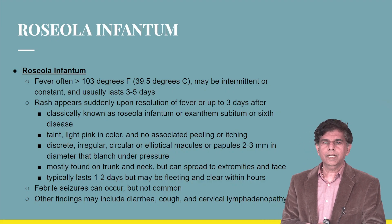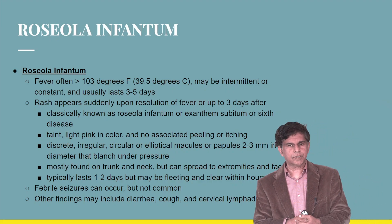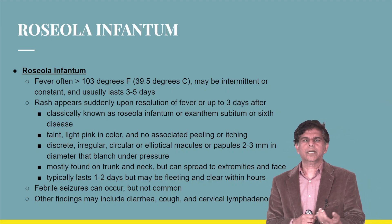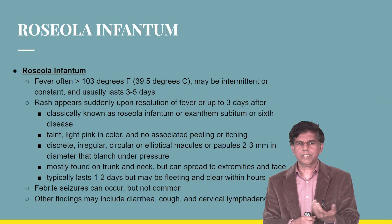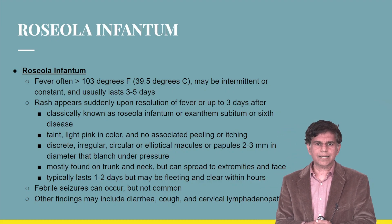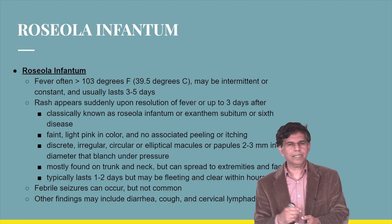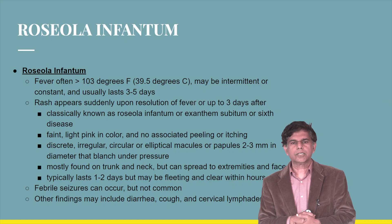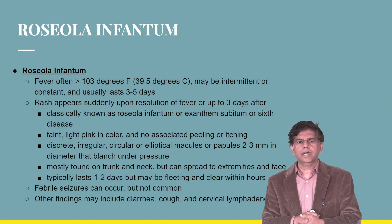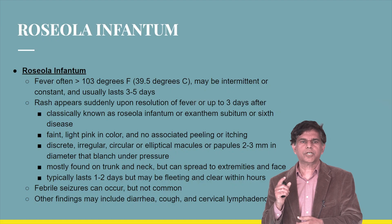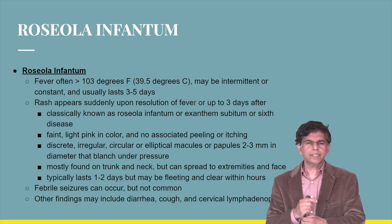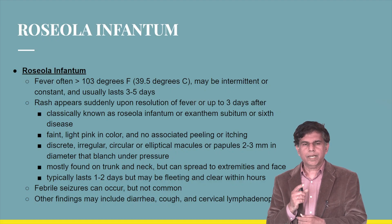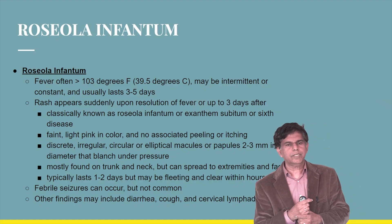Classically, this is called Roseola Infantum, Exanthem Subitum, or sixth disease. The rash is a faint light-pink color with no associated peeling or itching. It consists of discrete irregular circular or elliptical macules or papules, two to three millimeters in diameter, mostly found on the trunk and neck — though it can spread to the extremities and face. It typically lasts one to two days. Fever-induced seizures can also occur.